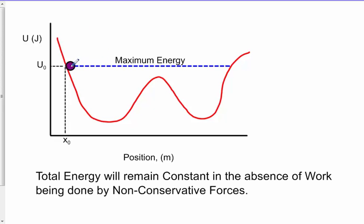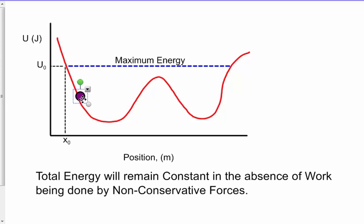The maximum energy that this object can have at any point in time is represented here in joules. Now I can slide along here, and obviously I'm reducing the potential energy. The total energy will remain constant in the absence of work done by non-conservative forces.